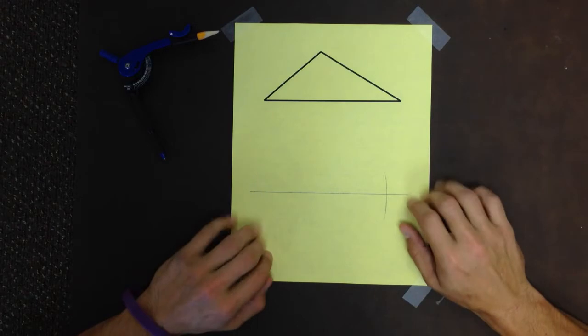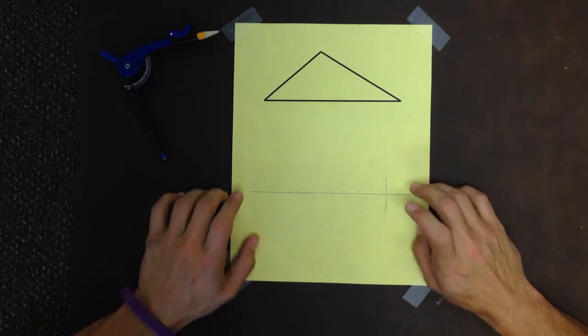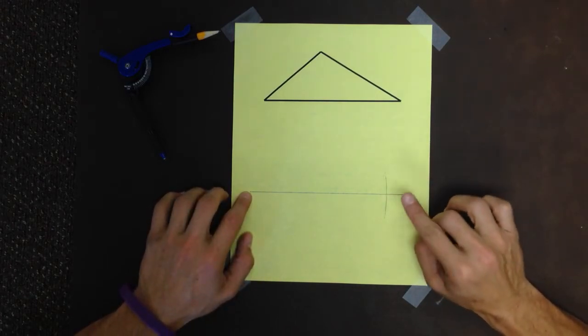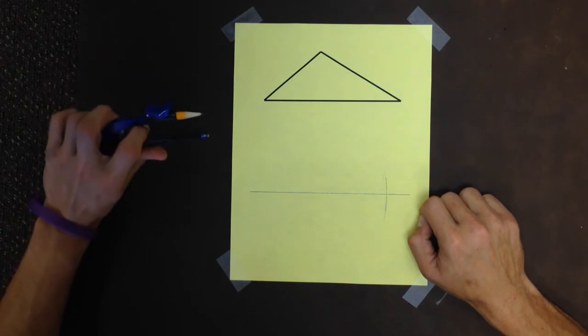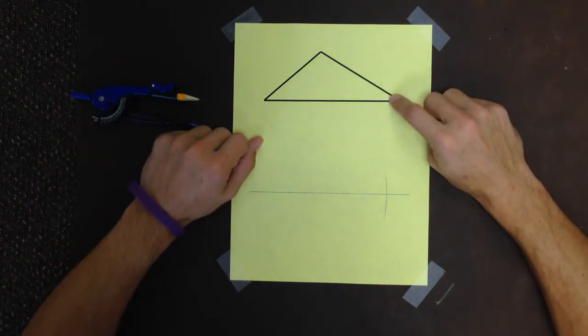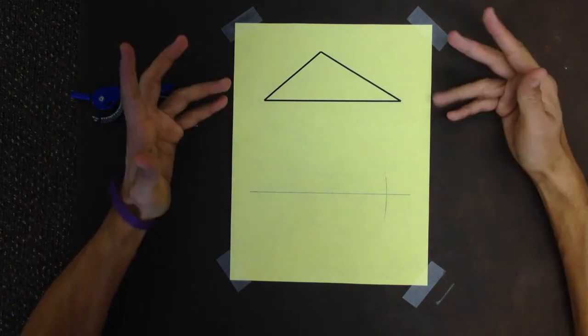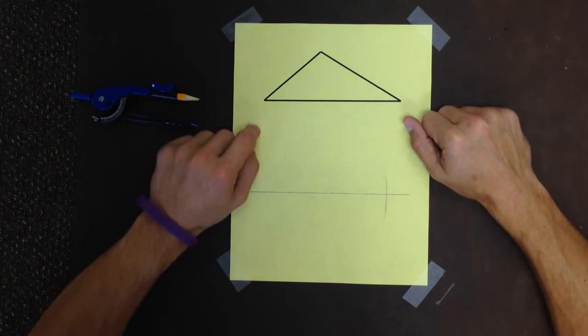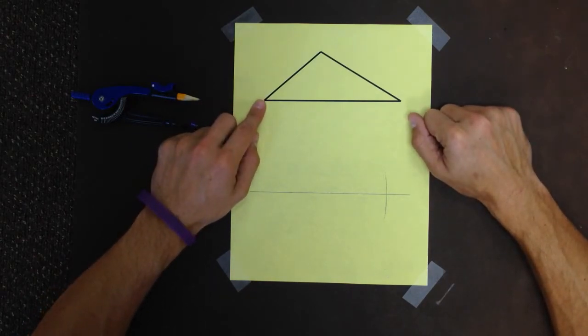But we're doing side angle side congruence. So that means after I construct a side, I need to construct a congruent angle. I'm going to construct an angle that is congruent to this angle over here on the left.